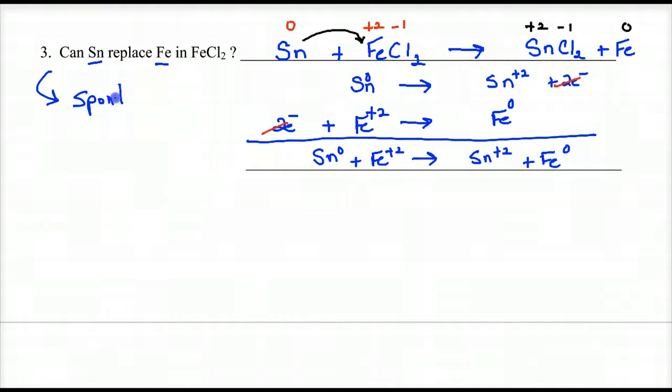Now that we have our half reactions and our overall reaction balanced, because we balanced the electrons, let's look at the question: can tin replace iron? What they're really asking here is, is this spontaneous? Will this work? And the way to answer this is through voltages. What is the E zero of cell? What's the net voltage, the net electromotor force?